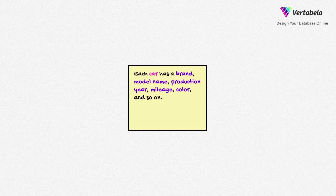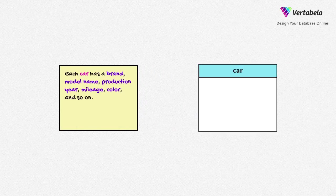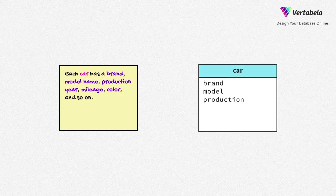Attributes describe features of your entities. They become columns in your database model. In a car rental system, the table car has columns: brand, model name, production year and others.